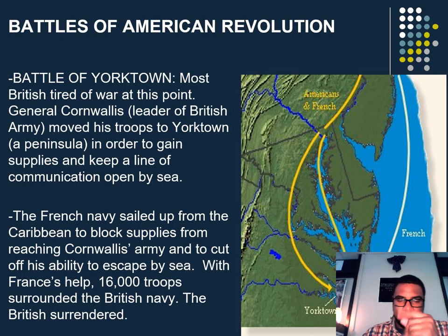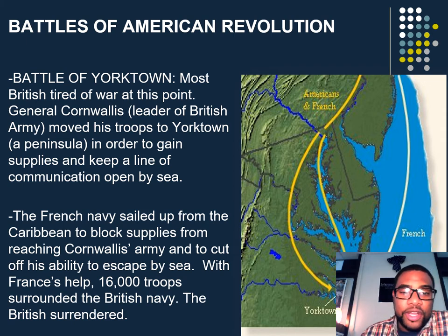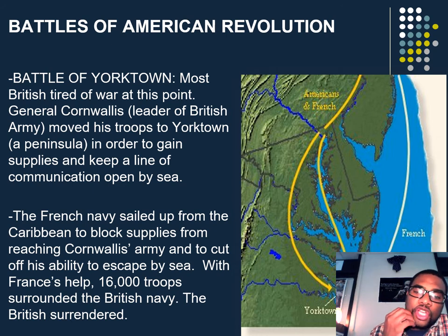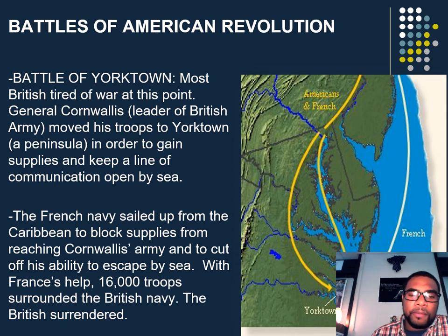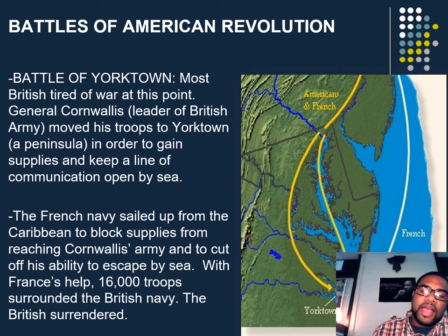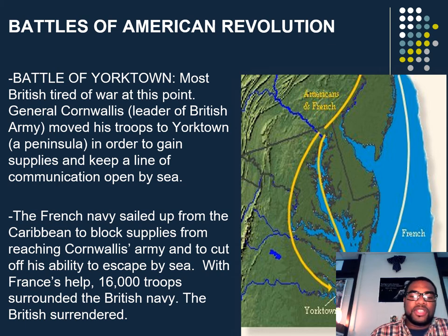The next battle is the Battle of Yorktown. Most British were tired of war at this point. General Cornwallis was the leader of the British Army. He moved his troops to Yorktown in order to gain supplies and keep a line of communication open by sea. The French Navy sailed up from the Caribbean to block supplies from reaching Cornwallis's army and to cut off his ability to escape by sea.